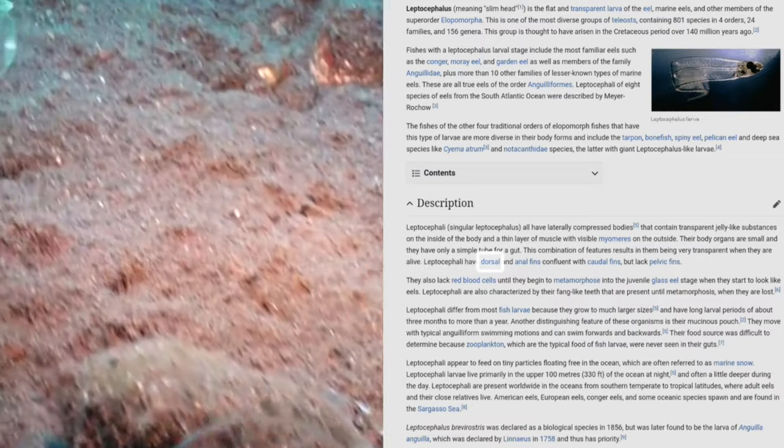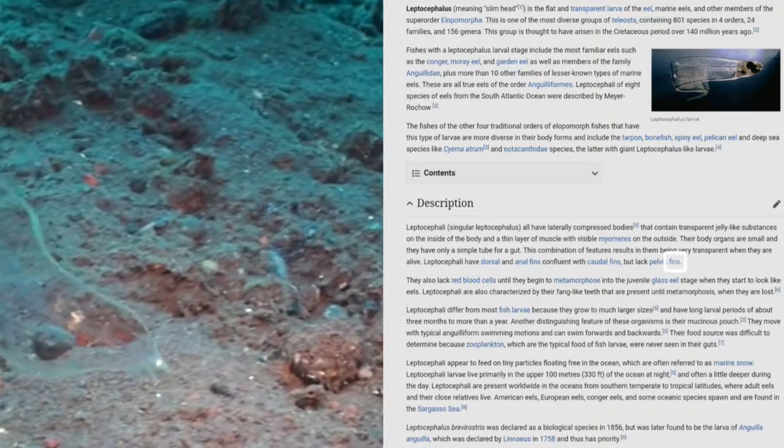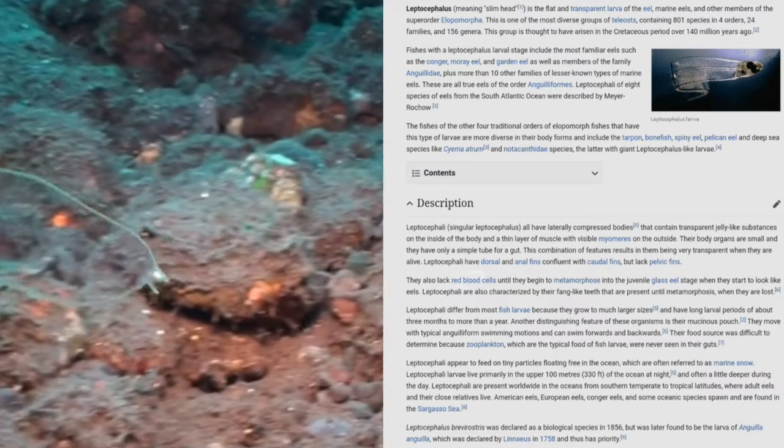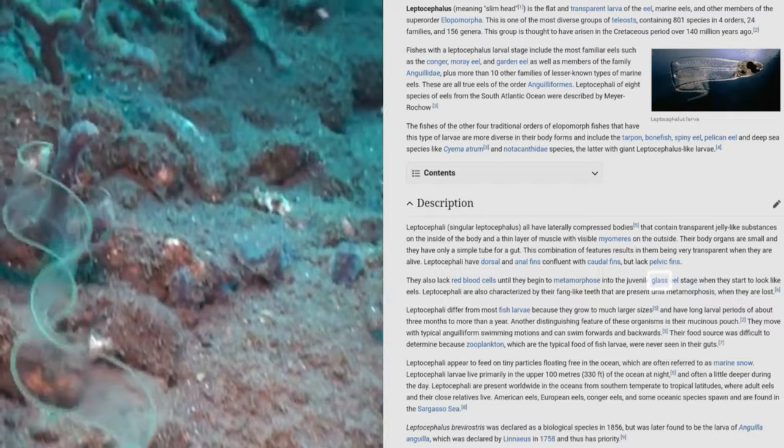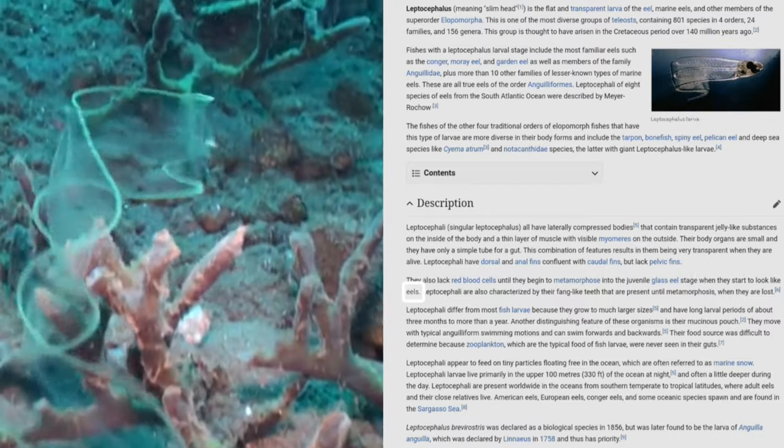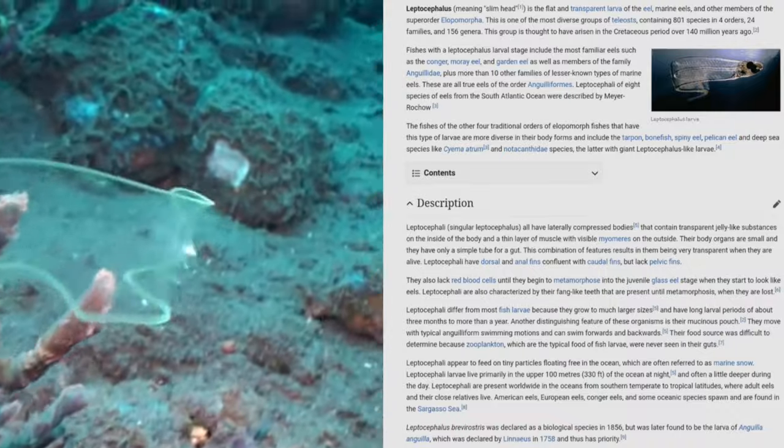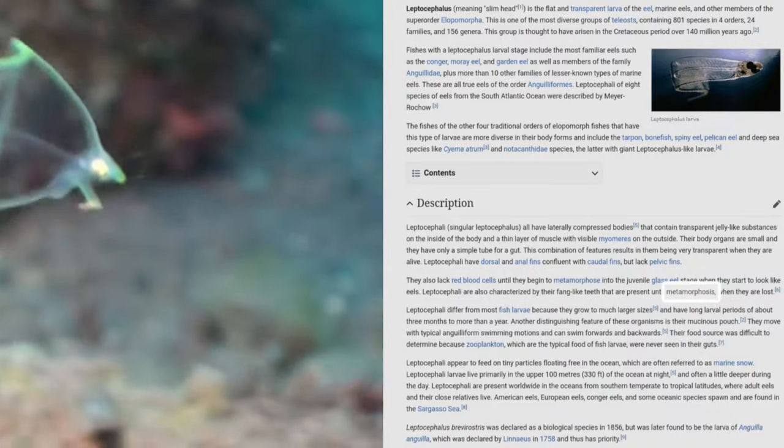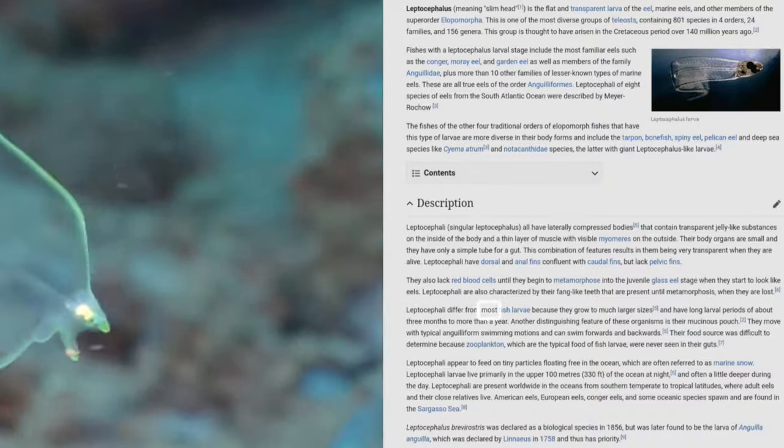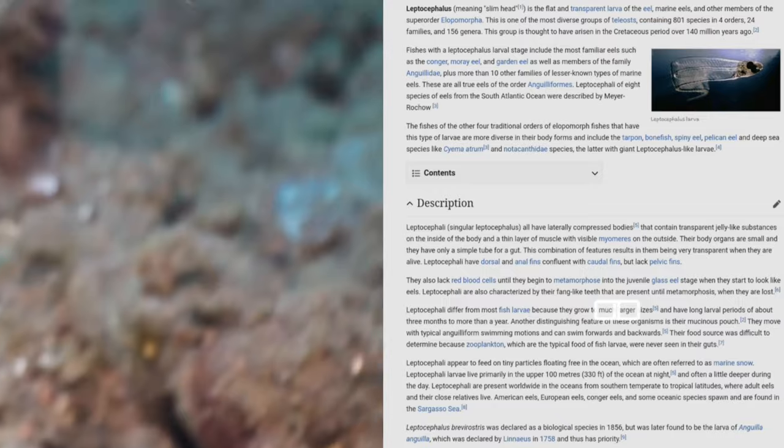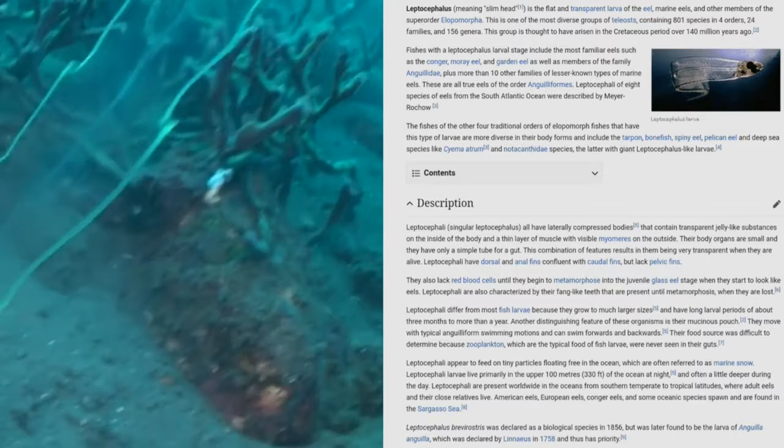Leptocephali have dorsal and anal fins confluent with caudal fins but lack pelvic fins. They also lack red blood cells until they begin to metamorphose into the juvenile glass eel stage when they start to look like eels. They are also characterized by their fang-like teeth that are present until metamorphosis, when they are lost. Leptocephali differ from most fish larvae because they grow to much larger sizes and have long larval periods of about 3 months to more than a year.